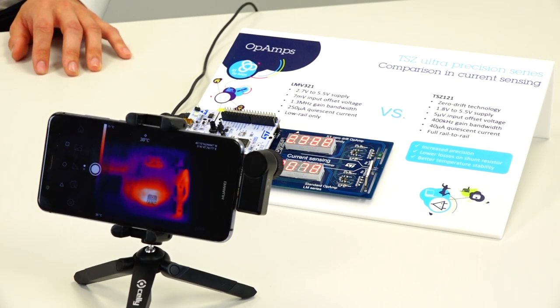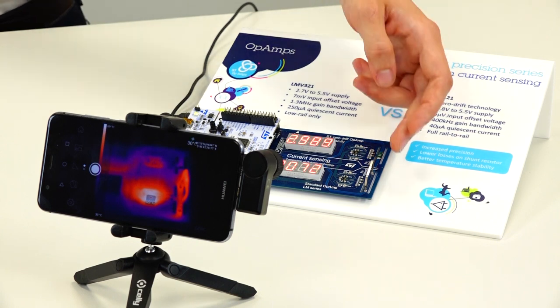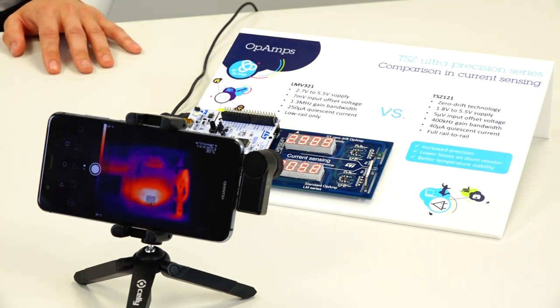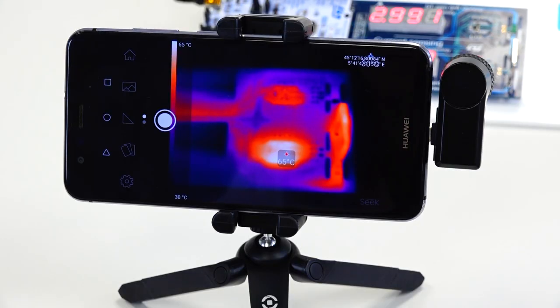Both setups were designed to have similar accuracy. Therefore, the shunt resistor for the LMV device has a much higher value and heats much more. It can be clearly seen on the thermal image. The setup with TSZ uses a smaller shunt which brings much smaller dissipation.